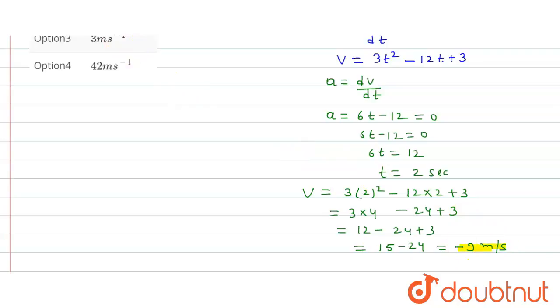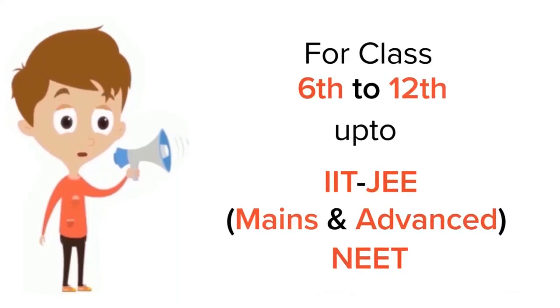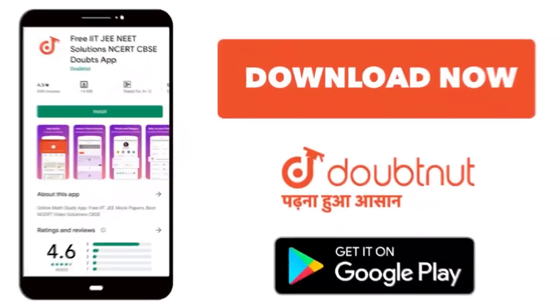So the value of velocity is minus 9 meter per second. So option 1 is the correct option. Thank you. For class 6 to 12, IIT, JEE and NEET level, trusted by more than 5 crore students, download Doubtnet app today.